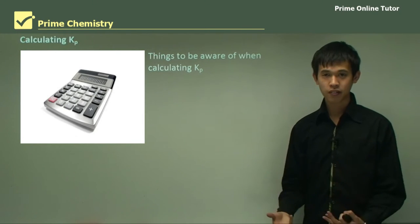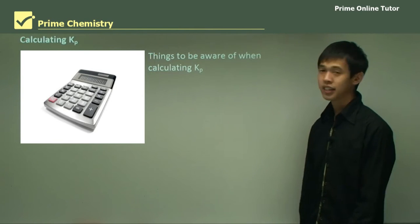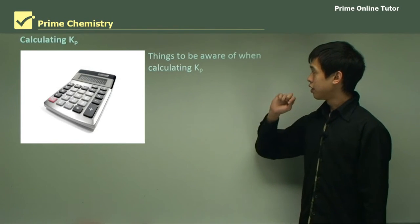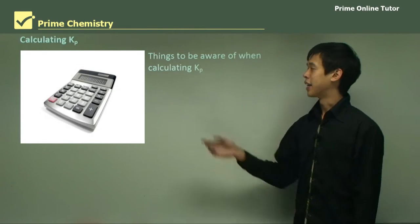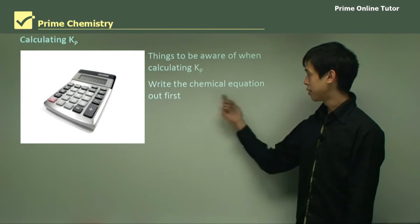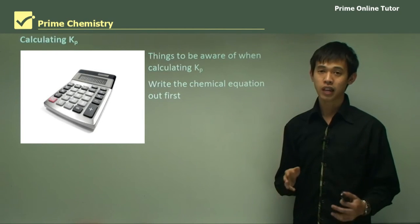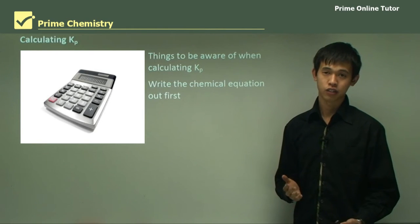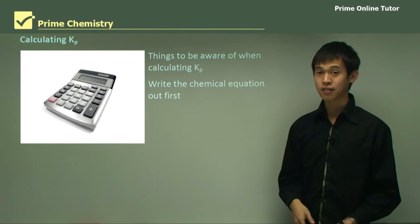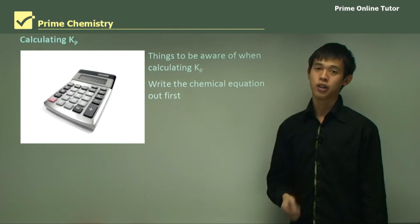So calculating Kp is what we're after. There will be more than likely a question on this in the HSE, so we have to be aware of certain things when we calculate this Kp. First things first, write the chemical equation before you attempt any sort of Kp calculation. Write down the equation and that's good practice for any chemistry question. You should write down the chemical equation first.